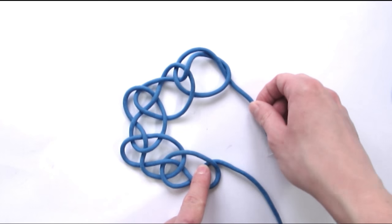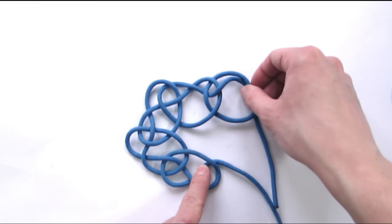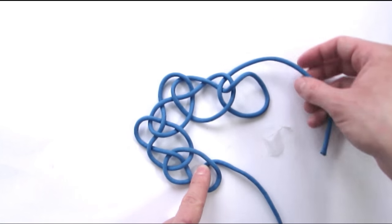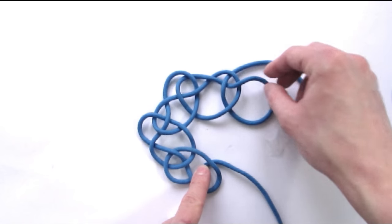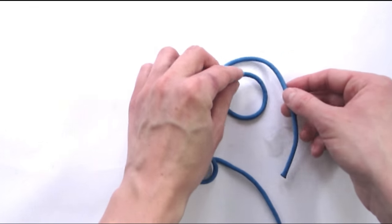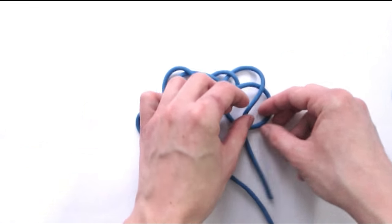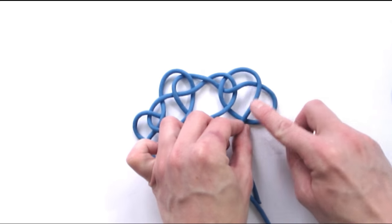We're then going to remove our standing end and pull it out of the loop, and place it over the loop, so over two.